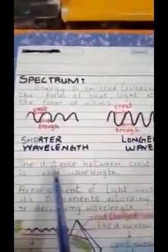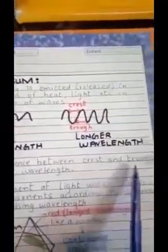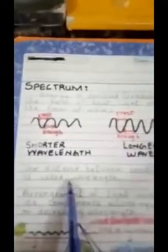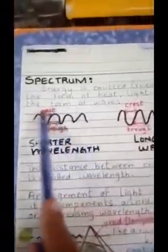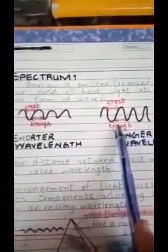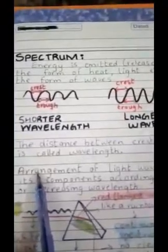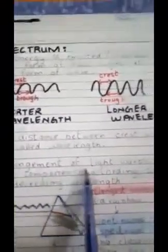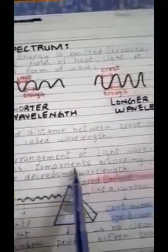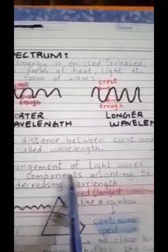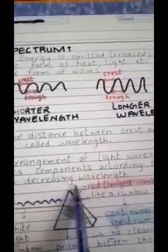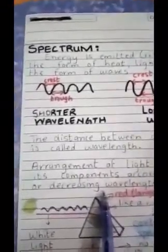So we say that the distance between the crest and the trough is called wavelength. This is the shorter wavelength as you can see over here and this is the longer wavelength. Now, spectrum arrangement of light waves into its components, components means parts, according to increasing or decreasing wavelength. Let's discuss an example.